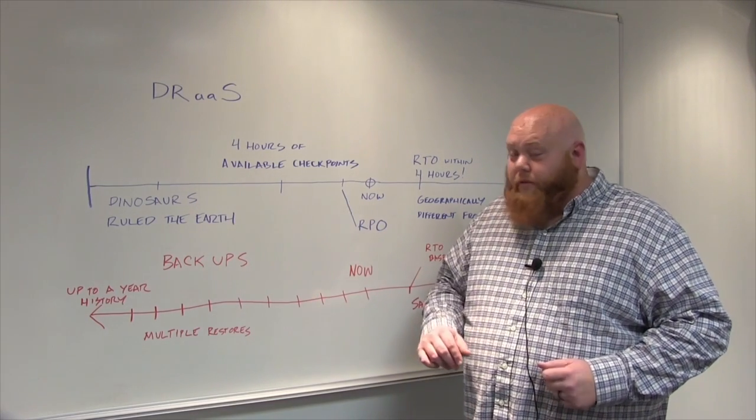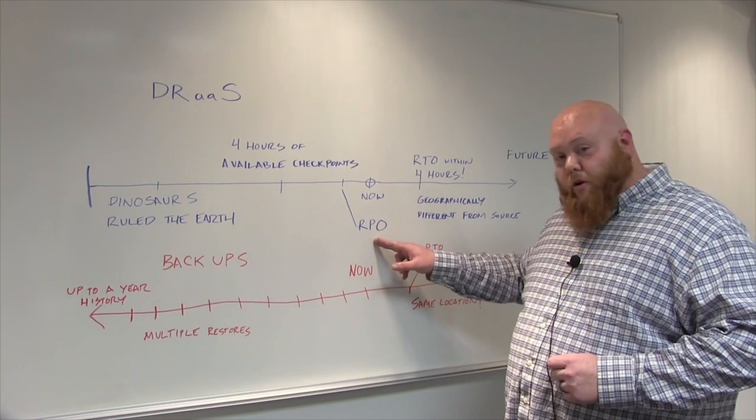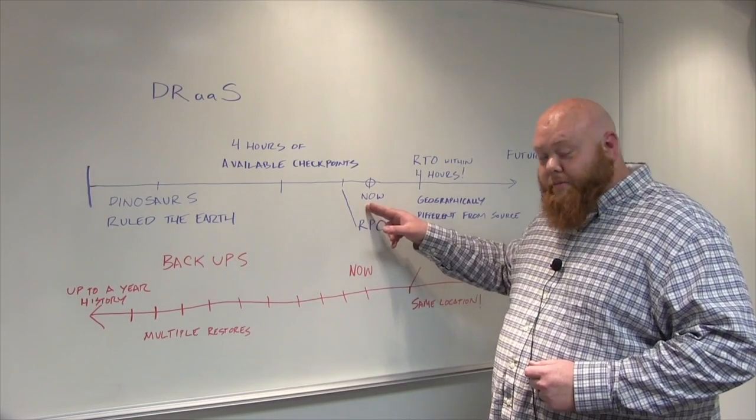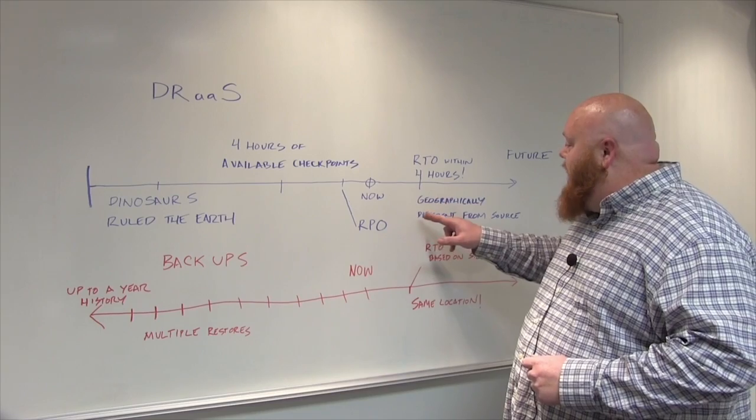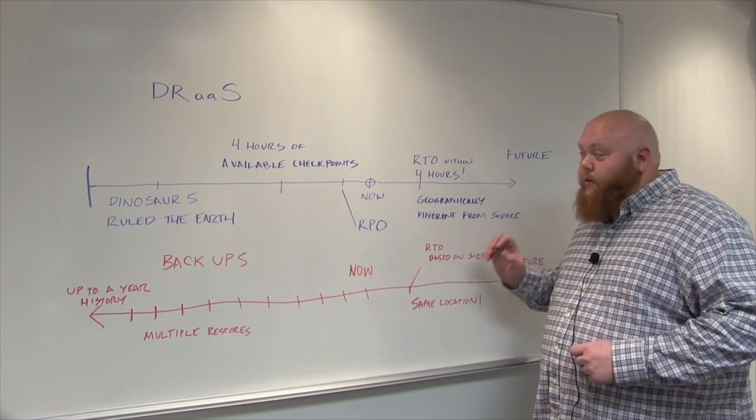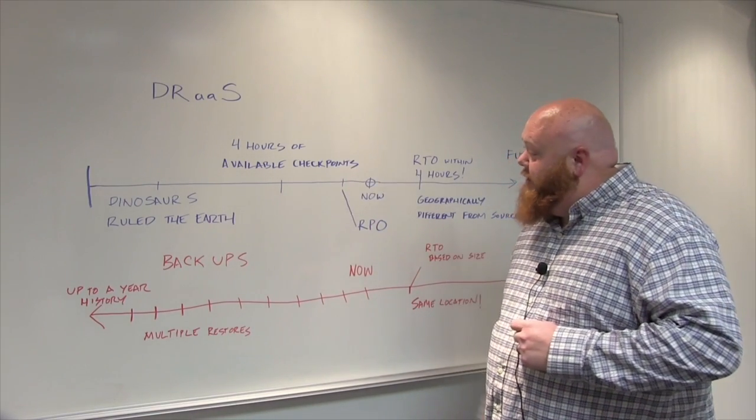Disaster recovery as a service focuses on a short recovery point objective, meaning the data we're restoring from is as close to now as possible, with an RTO within four hours. It brings machines up in a geographically different location, protected from whatever happened to your data in the original location.